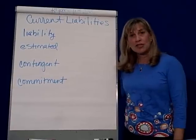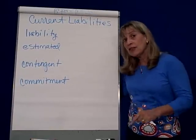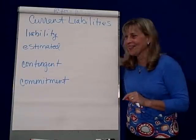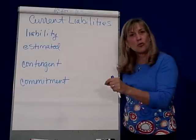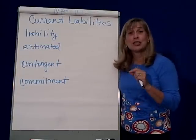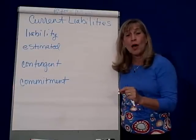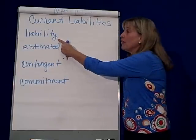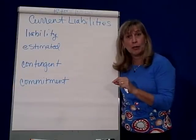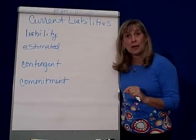Current liabilities are obligations that you will fulfill within the next year. The first type is a straight liability, where the amount is definitely determinable. I know when I owe it, I know how much I owe, and I know to whom I owe it. These liabilities show up on the balance sheet in current liabilities, or if they are longer-term promises, in long-term liabilities.